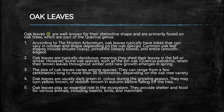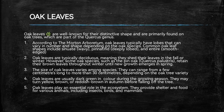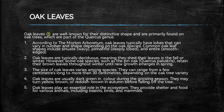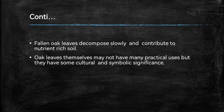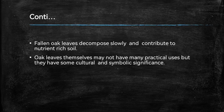However, some oak species such as the pin oak retain their brown leaves throughout the winter until new growth emerges in the spring. The size of oak leaves varies among species — they can range from a few centimeters long to more than 30 centimeters depending on the oak tree variety. Oak leaves are usually dark green in color during the growing season, but they may turn yellow, brown, or reddish-brown in autumn before falling off the tree. Oak leaves play an essential role in the ecosystem, providing shelter and food for various animals including insects, birds and mammals.